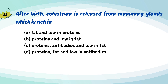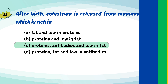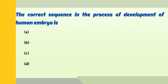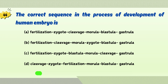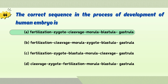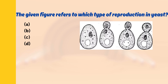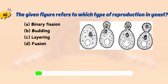After birth, colostrum is released from mammary glands, which is rich in? The correct sequence in the process of development of human embryo is? The given figure refers to which type of reproduction in yeast?